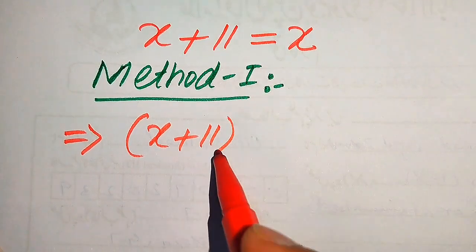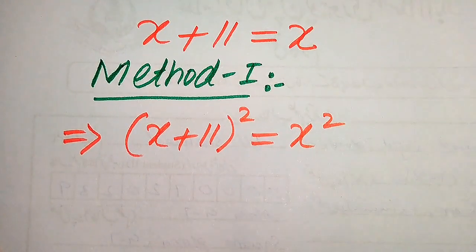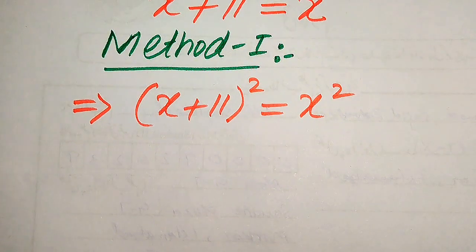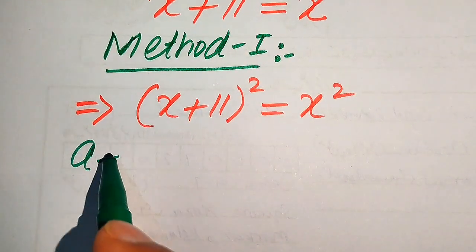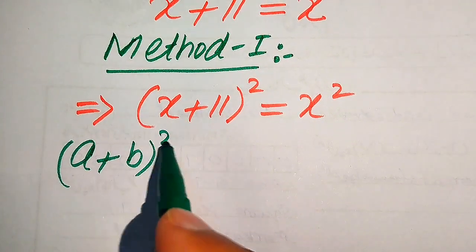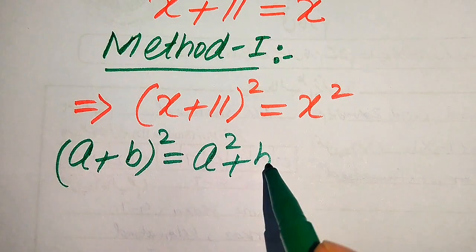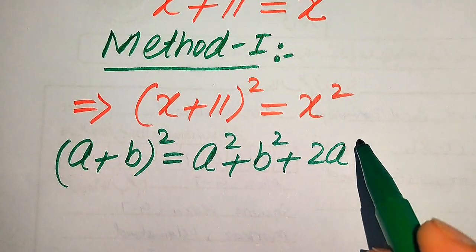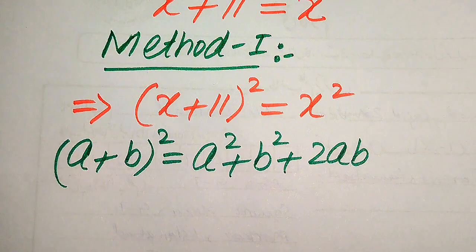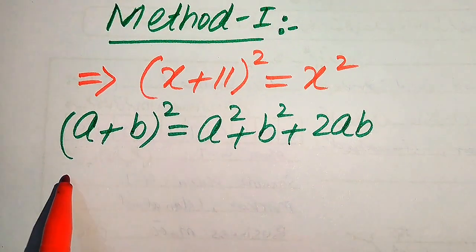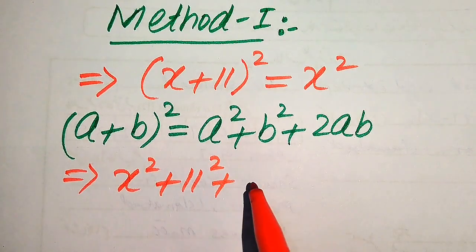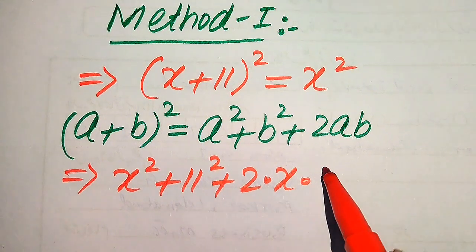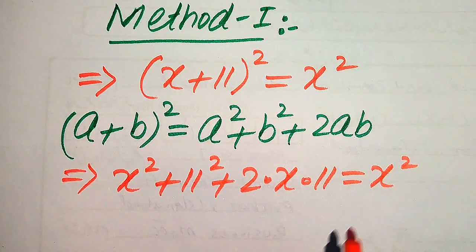For this, we need to square both sides of the equation. When we square both sides, it becomes (x + 11)² = x². Now we use the algebraic formula in the left-hand side: (a + b)² = a² + b² + 2ab. Expanding the left-hand side, it becomes x² + 121 + 22x = x².